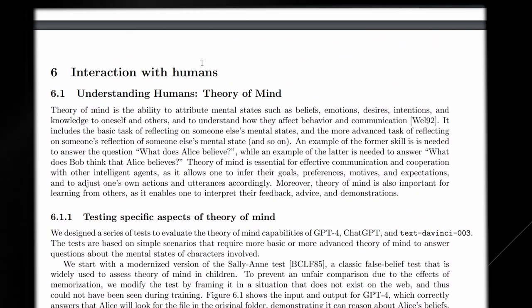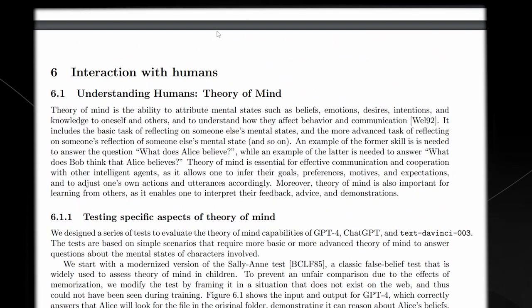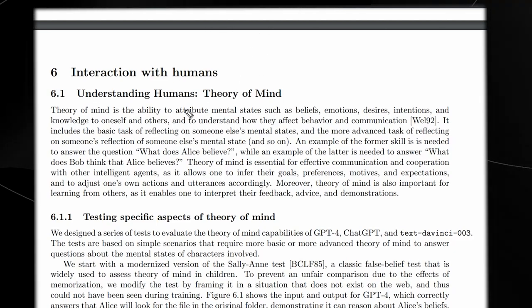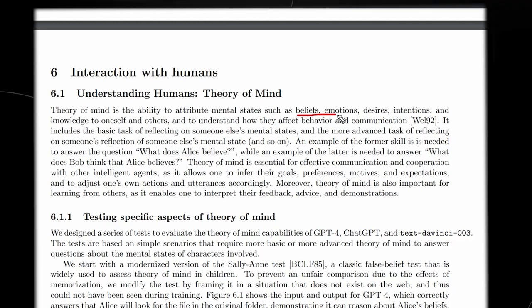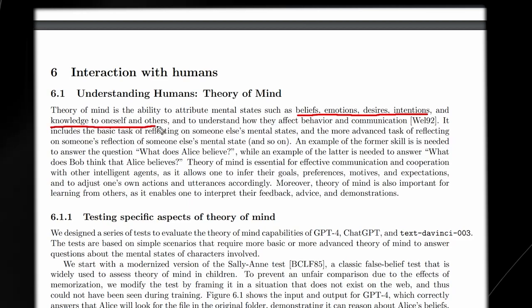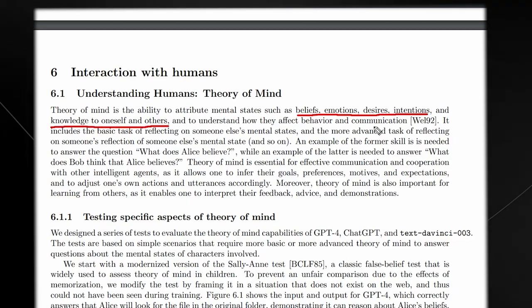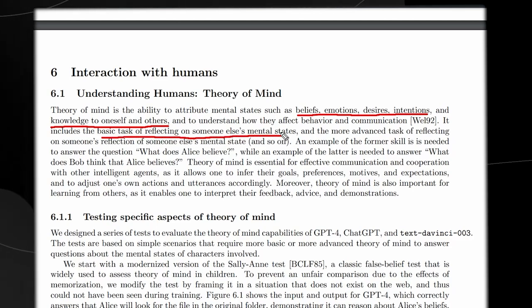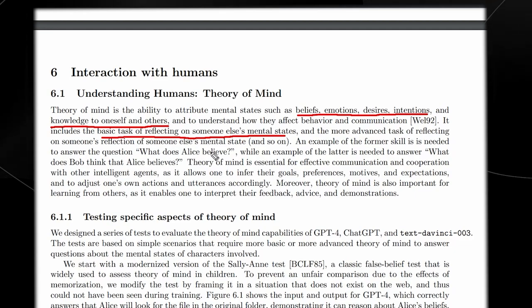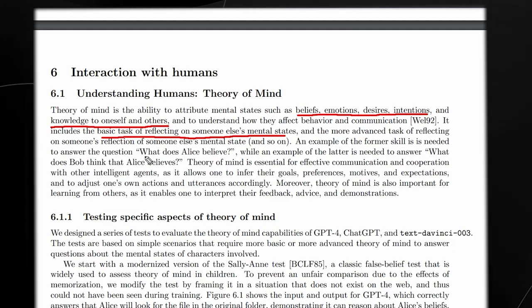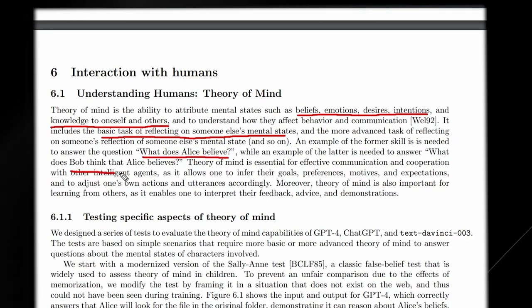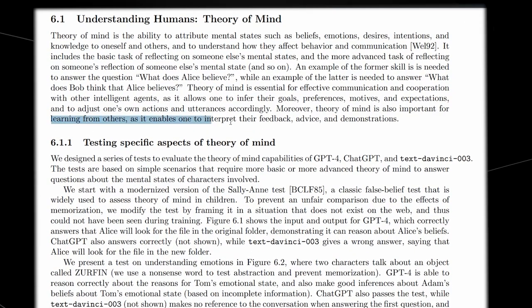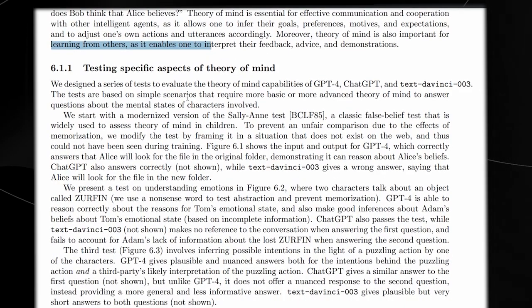Something that is very interesting, and something that many people didn't really think that large language models like ChatGPT were going to be able to have until very far in the future, was theory of mind. Theory of mind is the ability to attribute mental states such as beliefs, emotions, desires, and intentions, and the knowledge of oneself onto others and to understand how they affect the behavior and communication. It's basically having the empathy to be able to understand exactly how others are going to think and exactly what they're going to do.